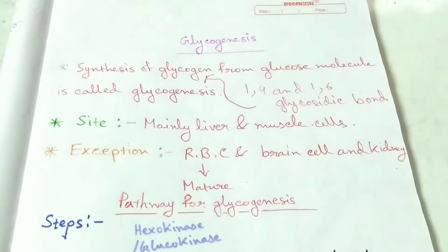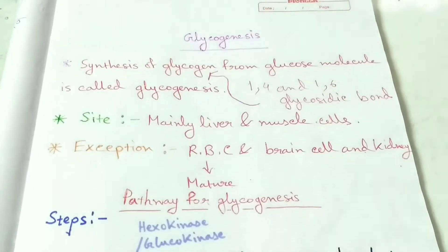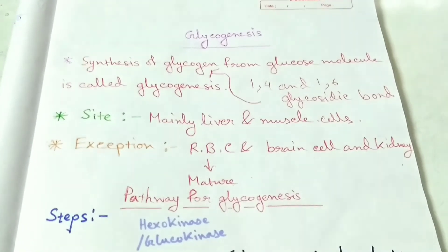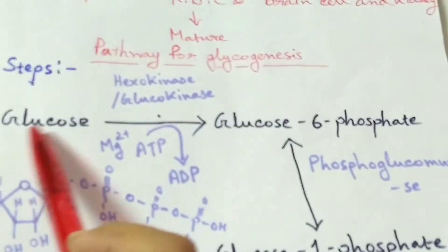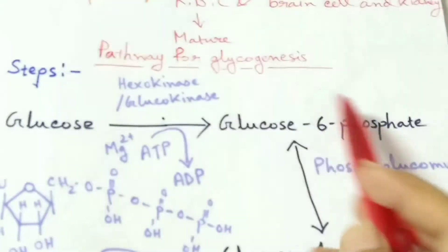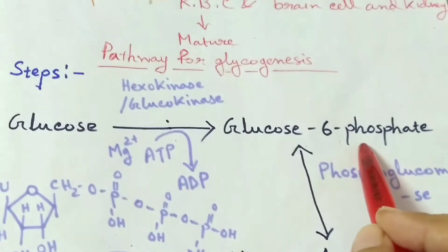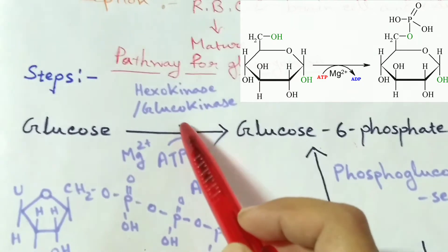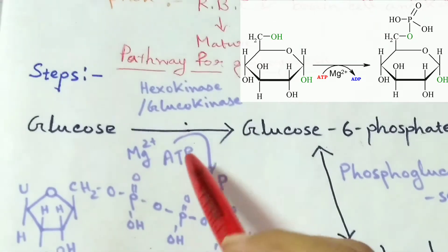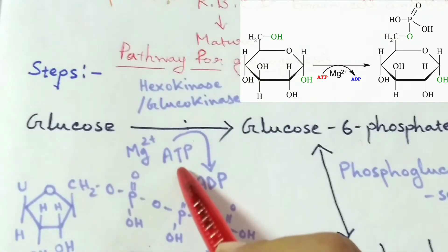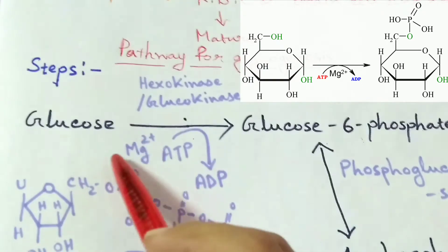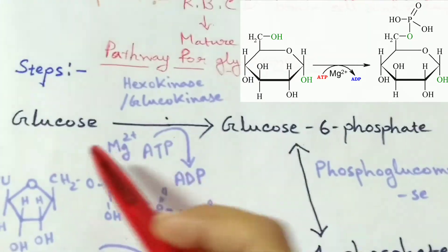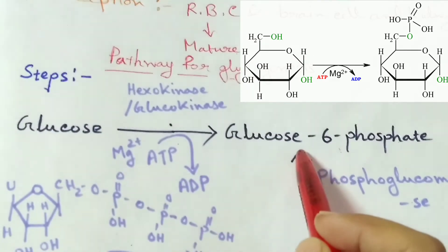The mature RBC, that is erythrocyte, and brain cells can take the glucose directly from the blood circulation. In the first step, glucose is converted into glucose-6-phosphate by means of enzyme hexokinase or glucokinase, using one molecule of ATP and Mg2+ as a cofactor. It is an irreversible reaction.